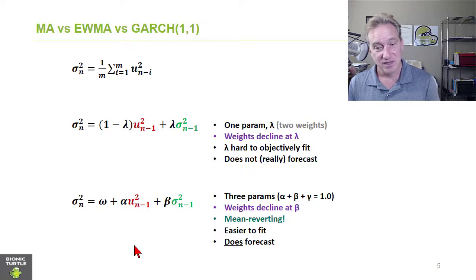And then also it does forecast because the forecast is going to be a variance series, an estimate of variance going forward that tends toward or converges toward the long run variance that's embedded in this omega term. So that's a recap of moving average versus exponentially weighted moving average versus GARCH 1.1. And thank you.